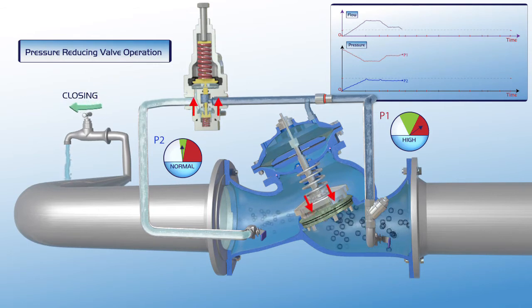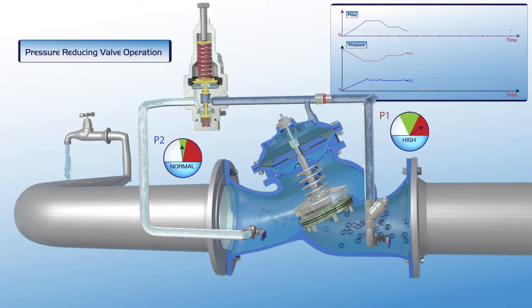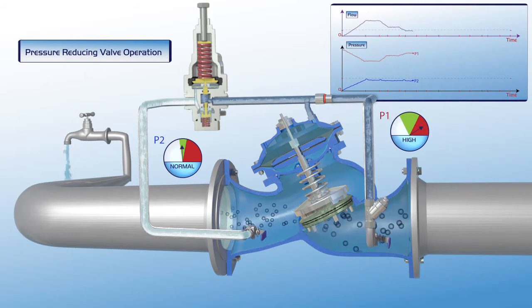Additional reduction in consumer demand results in additional increase of the P1 upstream pressure and further reduction of the system's flow. Note that the downstream P2 pressure remains stable at its green zone settings during this entire process.